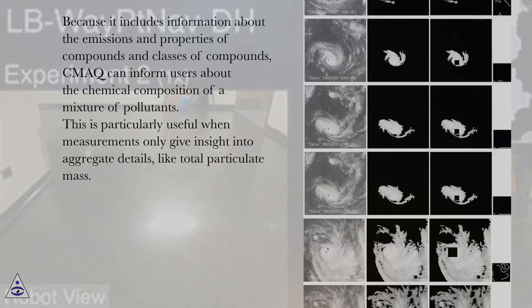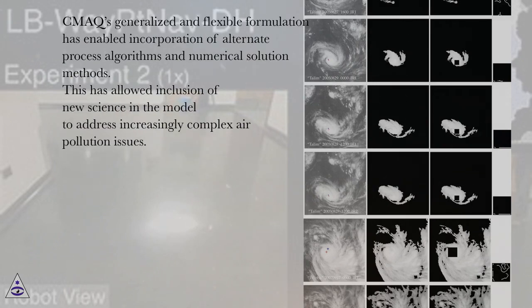Because it includes information about the emissions and properties of compounds and classes of compounds, CMAQ can inform users about the chemical composition of a mixture of pollutants. This is particularly useful when measurements only give insight into aggregate details, like total particulate mass. CMAQ's generalized and flexible formulation has enabled incorporation of alternate process algorithms and numerical solution methods. This has allowed inclusion of new science in the model to address increasingly complex air pollution issues.